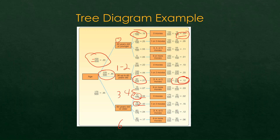So that is a tree diagram. You could have done it with one, two, three, or four branches and broken that up further — it would have given you the exact same thing. There's more than one way to do it. So that is probability tree diagrams and contingency tables. If you have any questions about that, feel free to post on the discussion board.